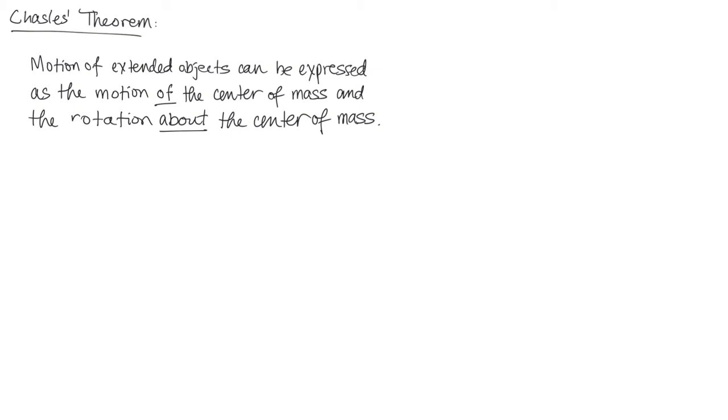So let's think about that and break it down a little bit. Imagine for a second we have a point particle that's being launched through the air near the surface of the earth, so we have gravitational acceleration. We know that in the absence of air resistance or other forces, if this object is in free fall, the object will execute a parabolic trajectory. It's a fairly straightforward trajectory.